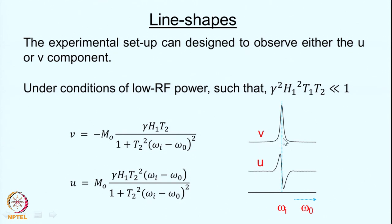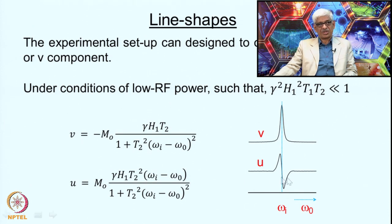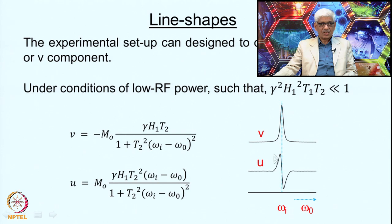Typically the absorption line shape is used for NMR spectra. The dispersive line shape is used for monitoring field drifts, especially for locking purposes, because it is easy to see deviation from the resonance condition — at resonance the dispersive signal is zero, and any deviation produces a correction signal for the spectrometer. The absorption line has a nonzero integral whereas the dispersive line shape has a zero integral.